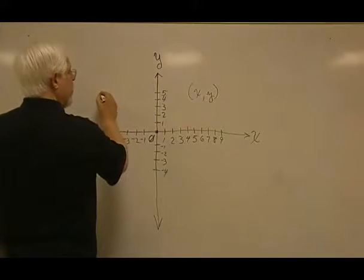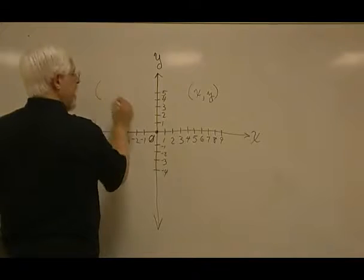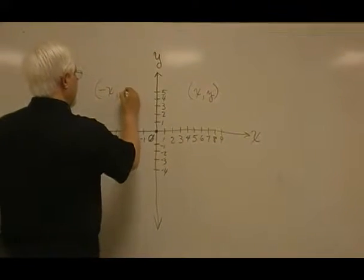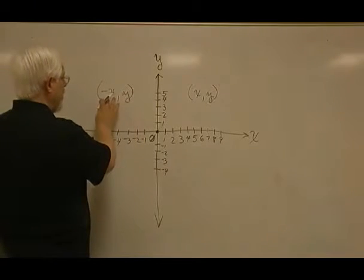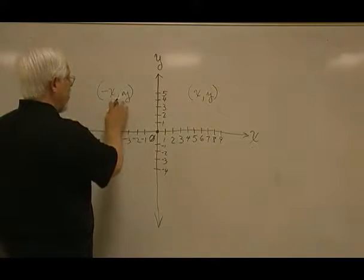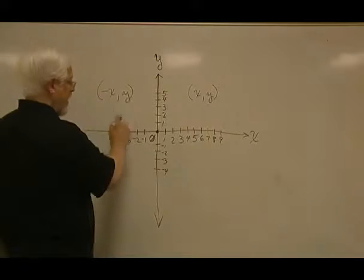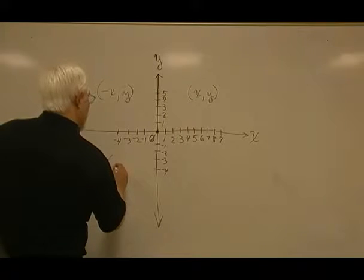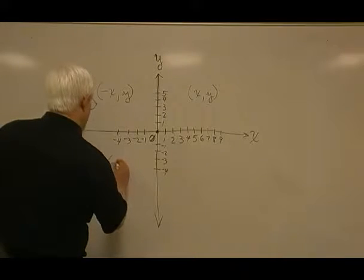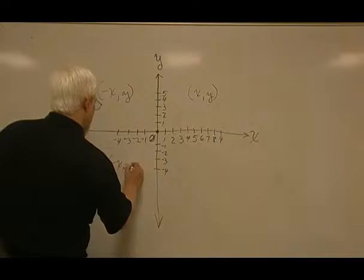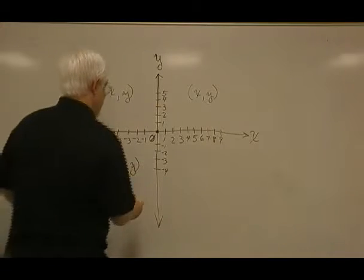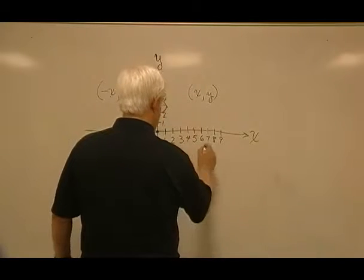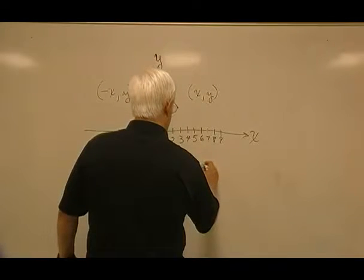If we're in quadrant 2, it would be negative x, positive y. Every number in this quadrant will be a negative value, comma, a positive value. In quadrant 3, we'll have negative x, negative y. And in quadrant 4, we will have positive x, and negative y.